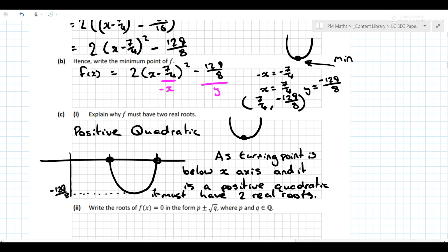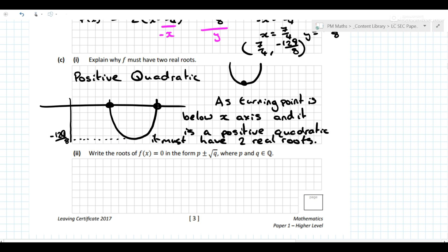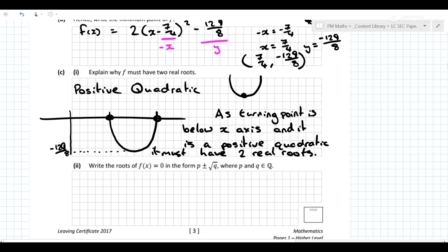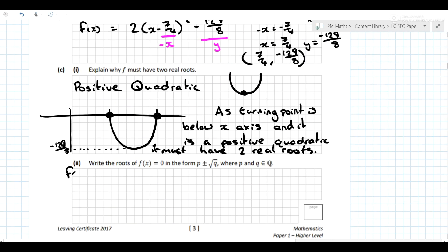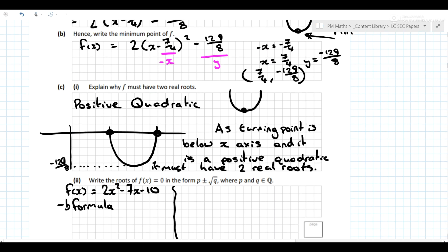And the last bit of the question asks you to actually find the roots. Now there's two ways of going about the question. I'm going to just come back and have a little look here. 2x² minus 7x minus 10—the function is 2x² - 7x - 10. You could use the minus b formula. You could use the minus b formula to go and actually find the roots and that's absolutely perfect.